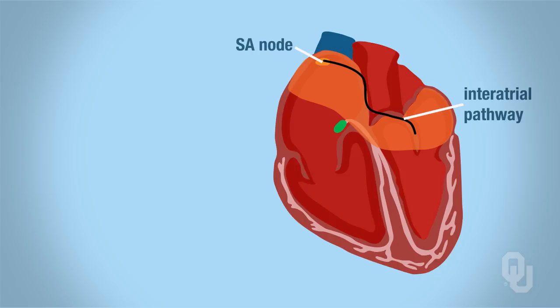Now to continue the spread of the action potential throughout the right atrium, that is going to take a different pathway, and that action potential is going to travel via the internodal pathway. Think of the name—inter is between nodal, node, so we're between two nodes. The nodes that we're between are the SA node and the AV node.